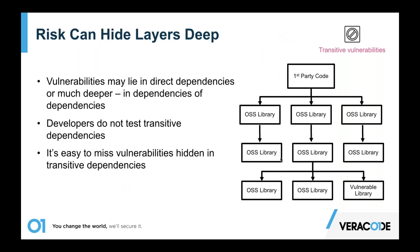On transitive vulnerabilities: first-party code uses direct libraries, but those libraries use other libraries, which use other libraries. If there's a vulnerability down the chain, it affects everything else — including the first-party code using the library at the top. An exploitable vulnerability will likely affect everything in that chain. That's an important challenge that you have to address.